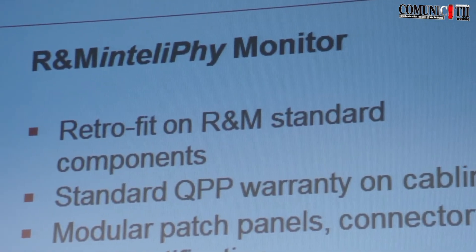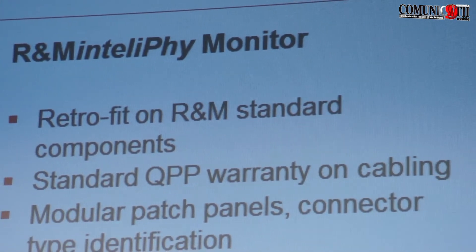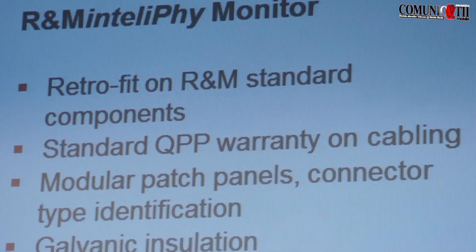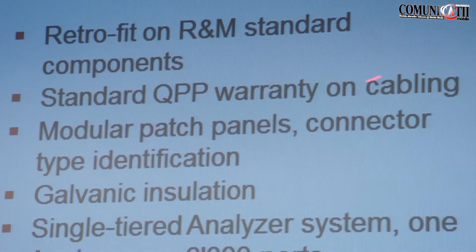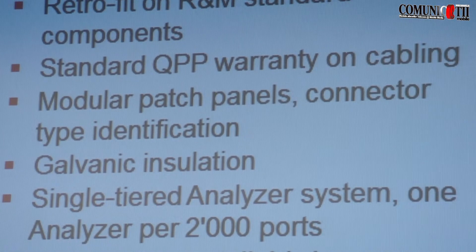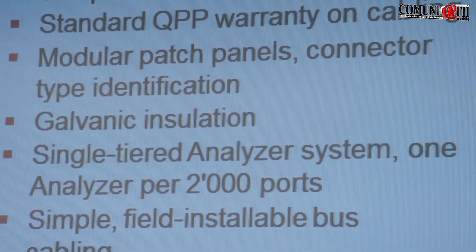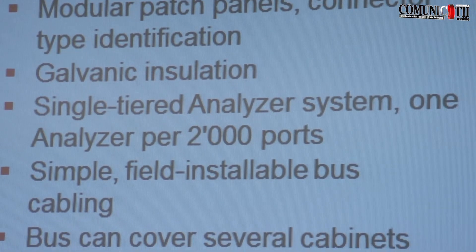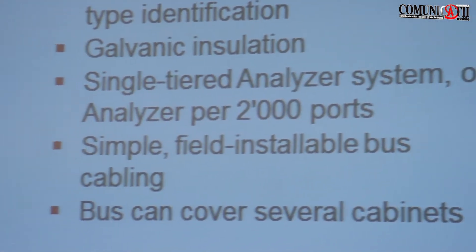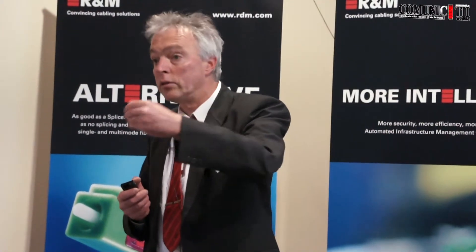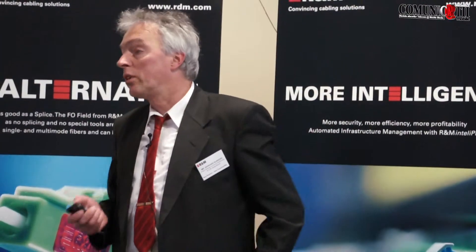Hardware-wise: the system is retrofittable — we are the only ones in the market who can retrofit patchcords and panels. All other systems require you to buy intelligence from day one. Because it is retrofittable, the intelligence does not interfere with actual user traffic, which means we can provide our standard 25-year or lifetime warranty also on the cabling part of AIM installations. If you have electronics embedded in panels, nobody will give you a 25-year warranty, and the chances of electronics breaking down before 25 years are definitely there. Replacing such a panel can be very messy — you have to decouple cables, re-terminate on a new panel, and perform re-qualification of the link, which can be very time-consuming.